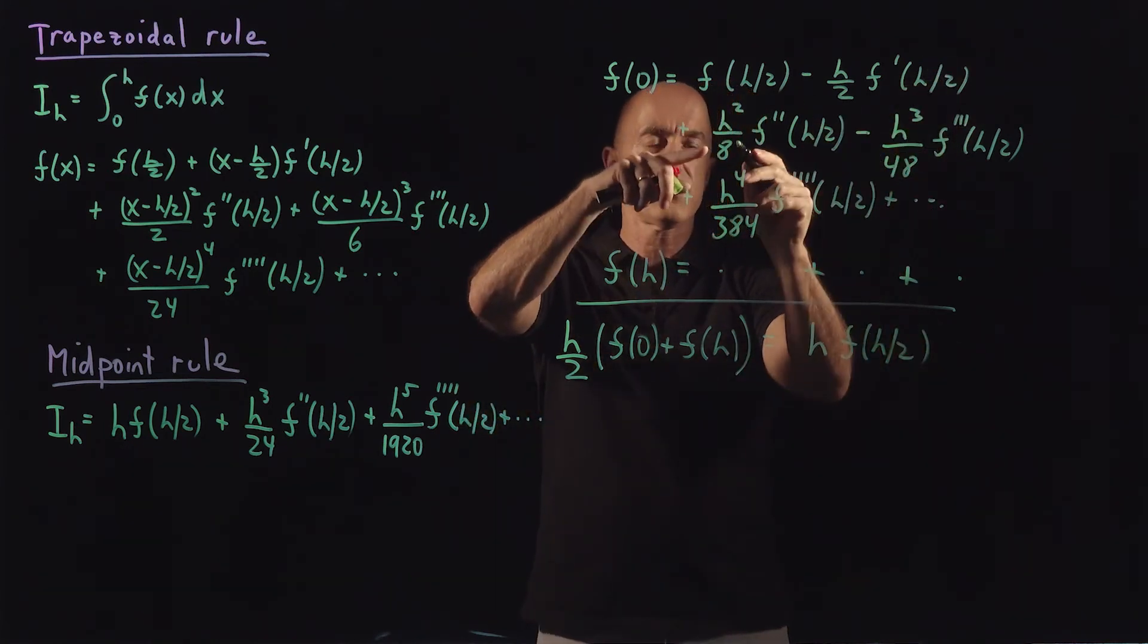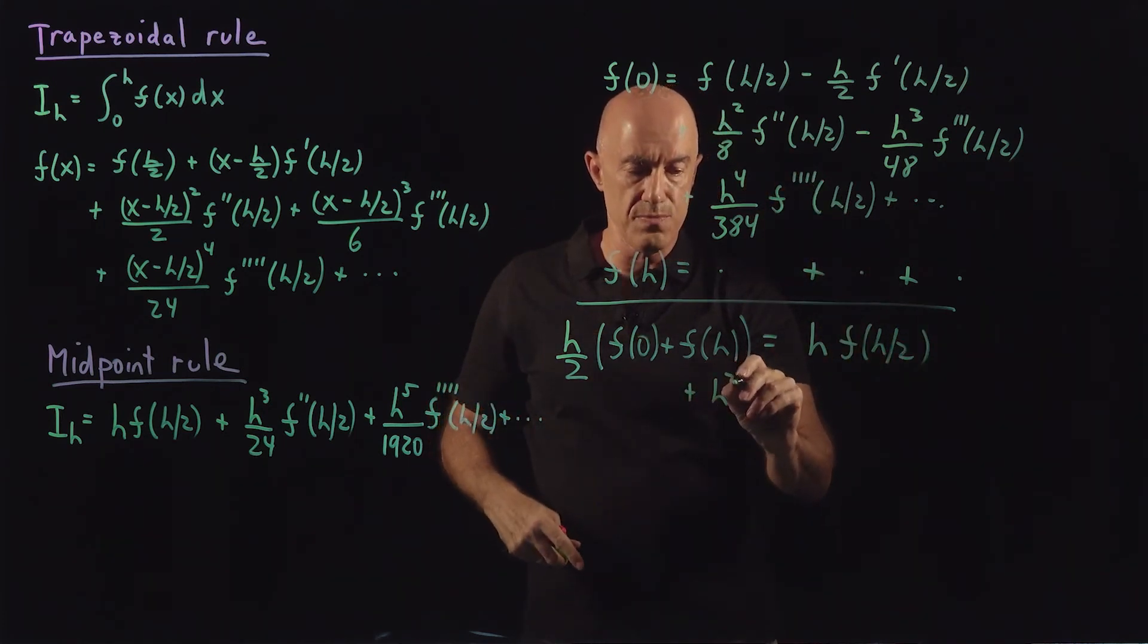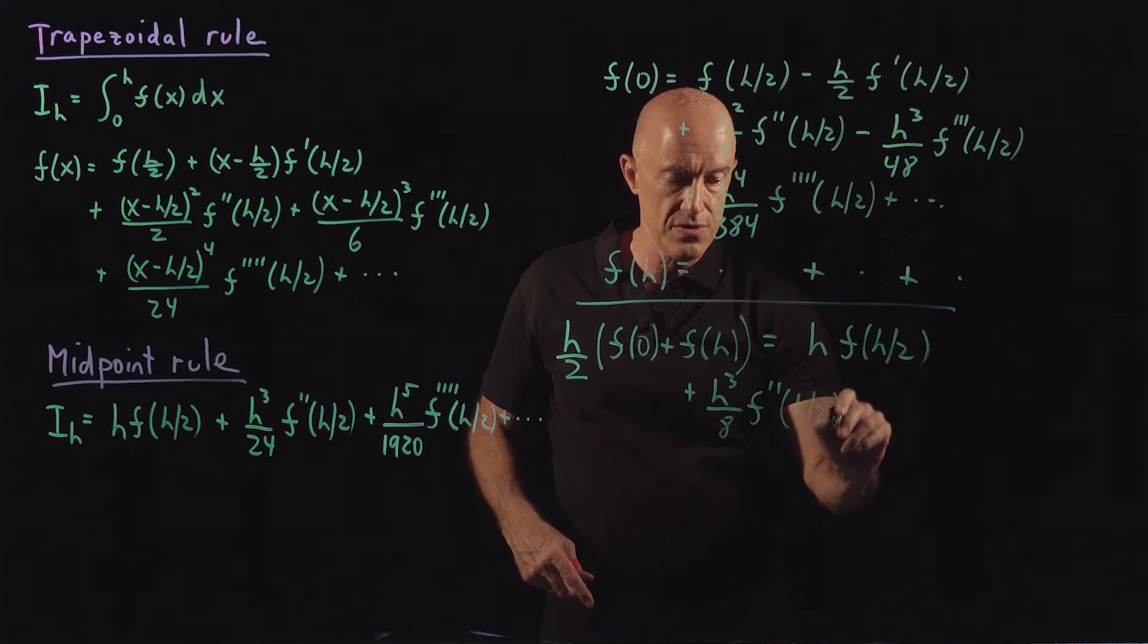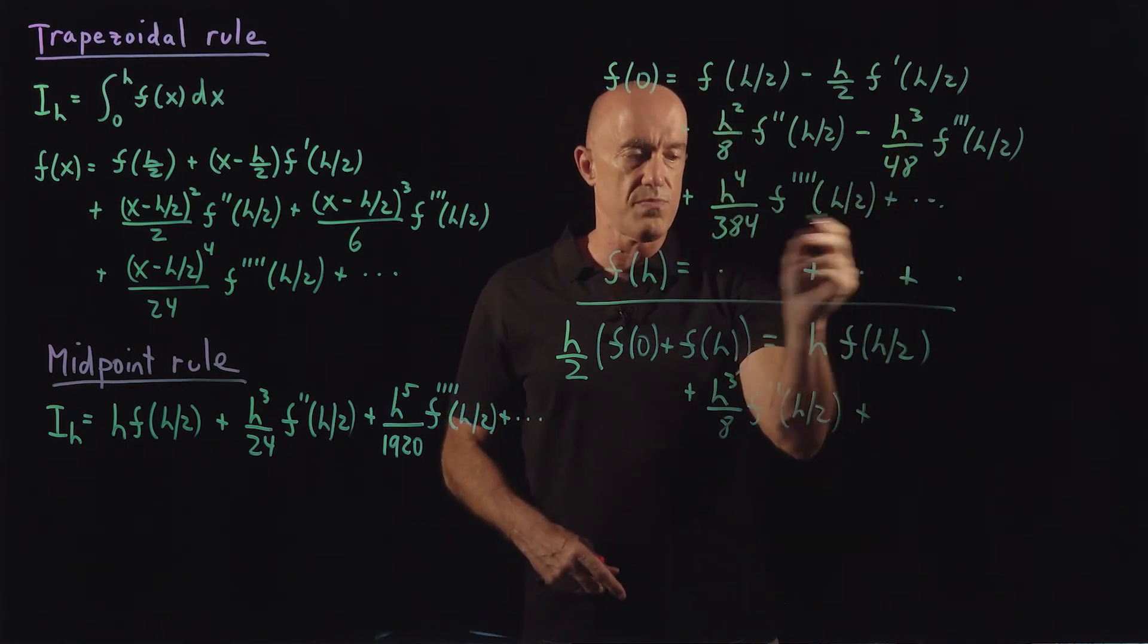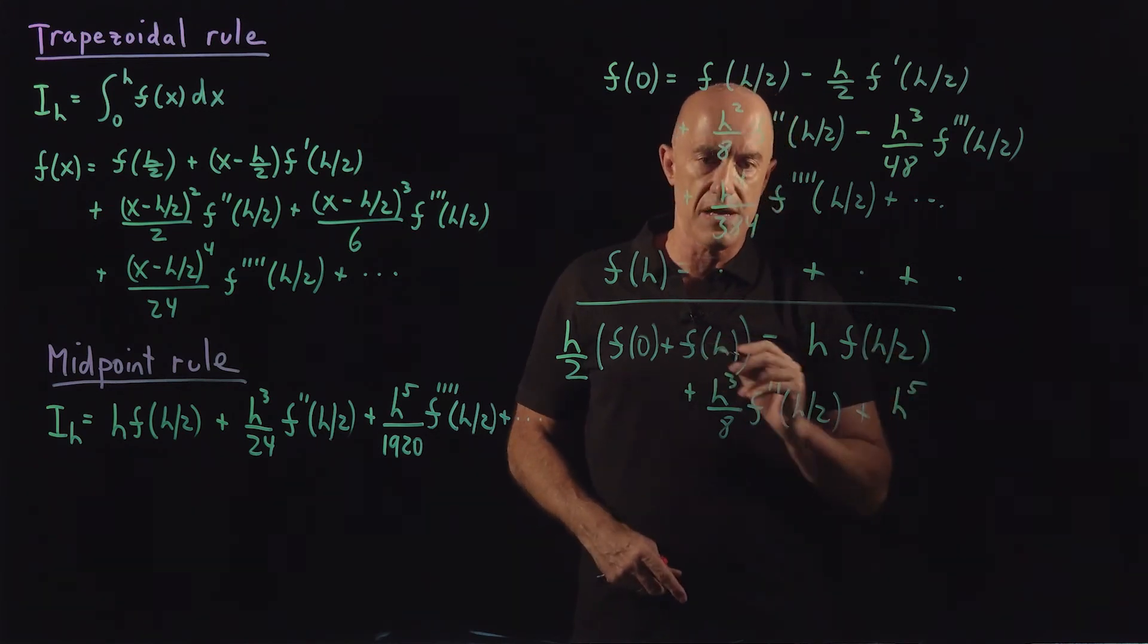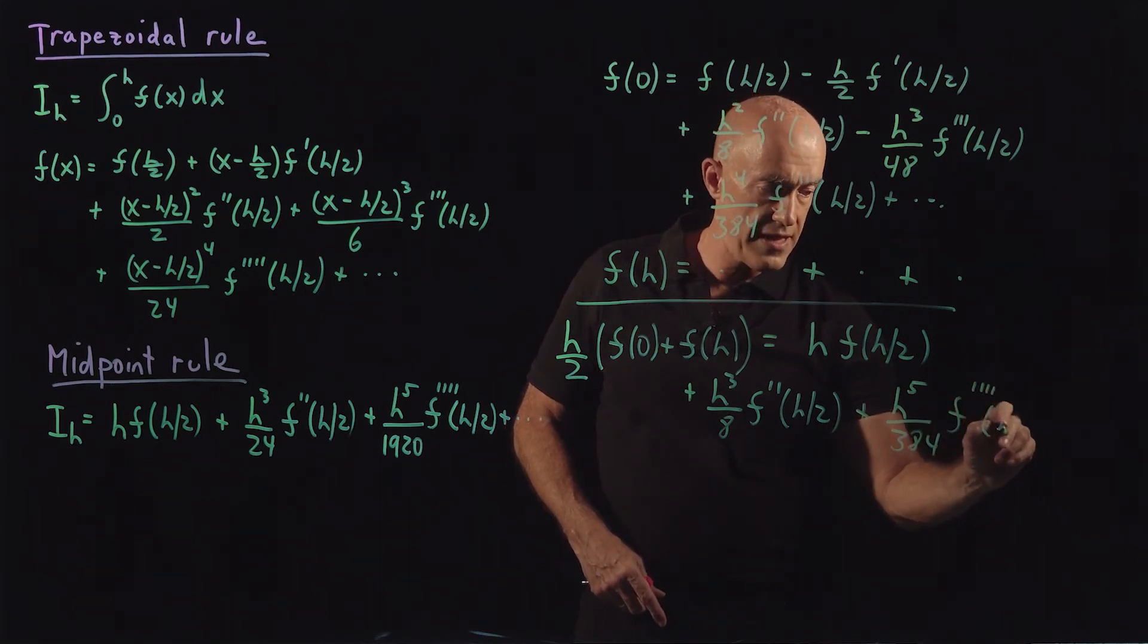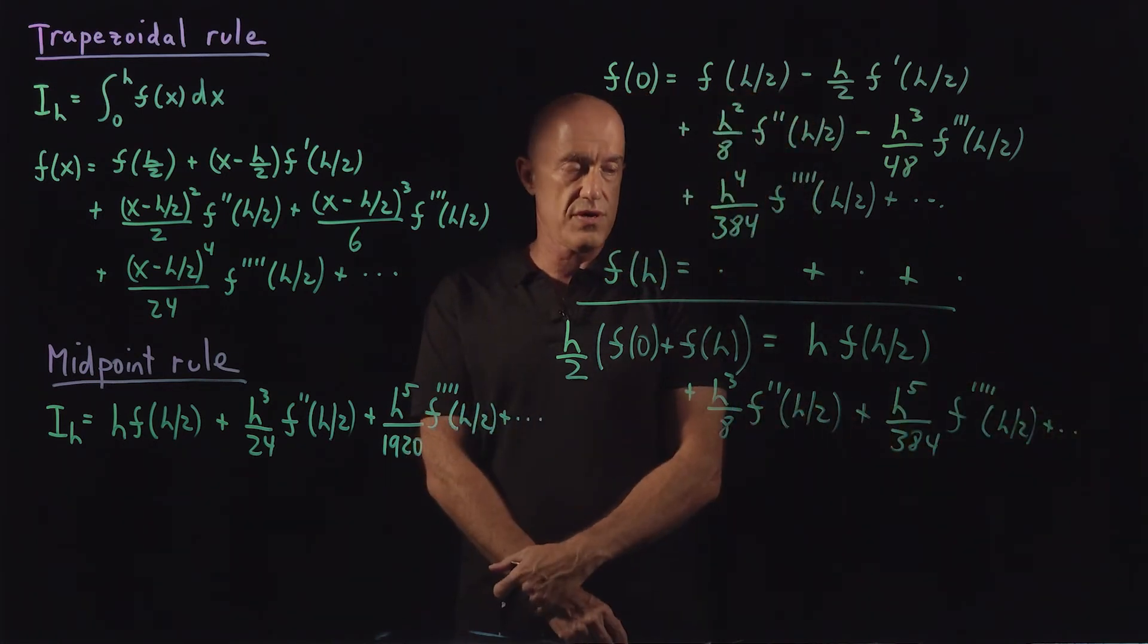The next term will be this one, so plus h cubed over 8 times f double prime of h over 2. And the minus sign will cancel. And the last one will be this one, plus h to the fifth, we multiplied by h, divided by 384 times f fourth of h over 2. And then we drop all the higher order terms.